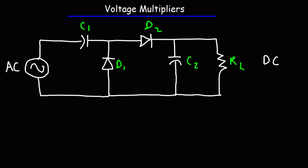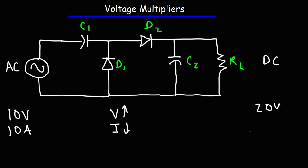Now let's talk about how this circuit works. This circuit can increase the voltage. So let's say the voltage of the input is 10 volts — the output voltage, not taking into account the diode voltage drops, will be approximately 20 volts. However, there's a trade-off: this circuit doesn't increase the energy of the system. If you increase the voltage the current will decrease. So at 100% efficiency, if the current was 10 amps, the maximum current at the output will be 5 amps, such that the power transferred is 100 watts. Power is voltage times current.